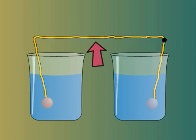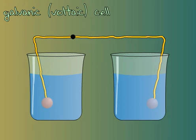This is known as a galvanic, or voltaic cell. You can remember that they are the same because of the V in both names.